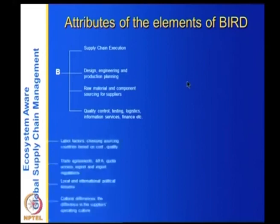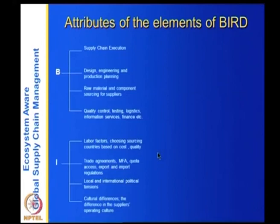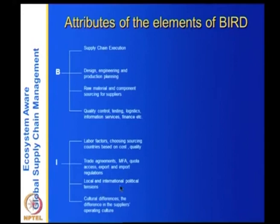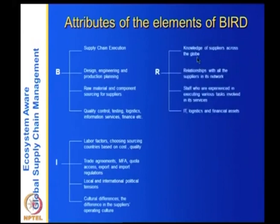We call it BIRD because of this structure. I — institutions — refers to governments, labour factors, sourcing countries based on cost and quality, trade agreements, multi-fiber agreement, quota access, export and import regulations, local and international tensions, and cultural differences in suppliers' operating culture. These are the institutional and social factors. R — resources — includes knowledge of suppliers across the globe, relationships with all suppliers in the network, experienced staff, IT, logistics and financial assets.